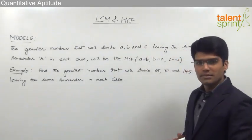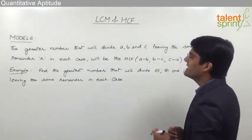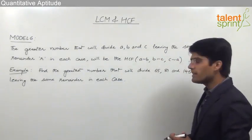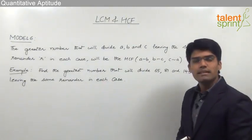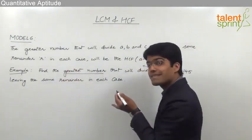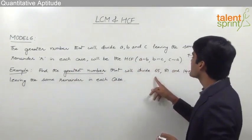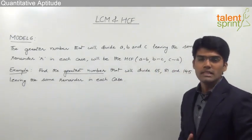Let us take an example to understand this. Find the greatest number that will divide 65, 81, and 145 leaving the same remainder in each case. As you can see here, we are supposed to find out the greatest number that can divide 65, 81, and 145 by leaving the same remainder in each of the cases.